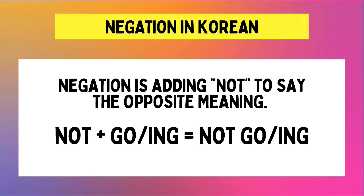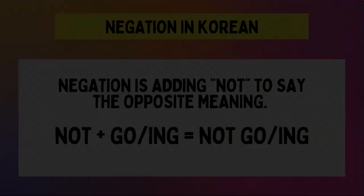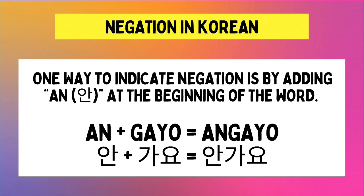From our previous word discussion, we have already introduced the concept of negation. In English, negation is done by adding NOT to say the opposite meaning of the word. So if the word is 'to go,' we will negate it by adding NOT at the beginning of it — the opposite of 'going' is 'NOT going.' And in Korean, one way to indicate negation is by adding AN at the beginning of the word.